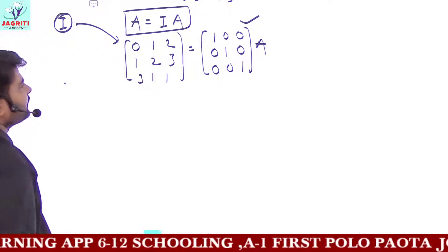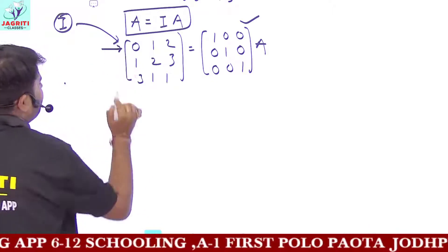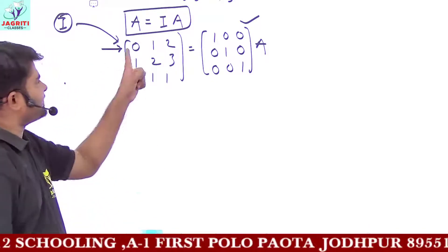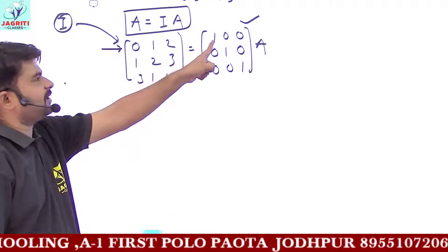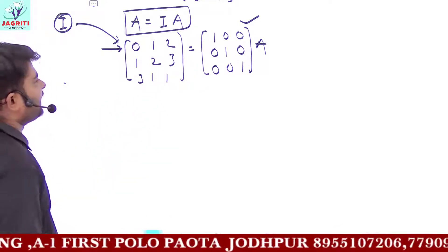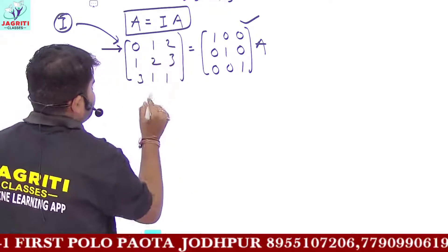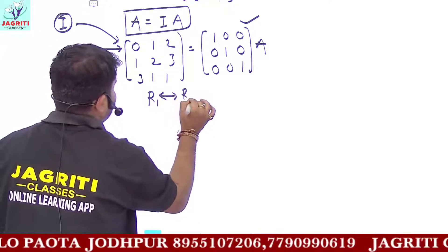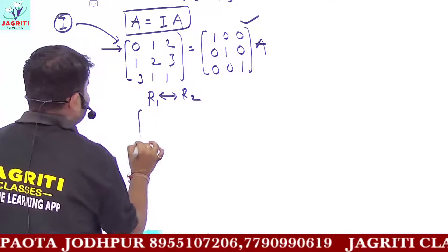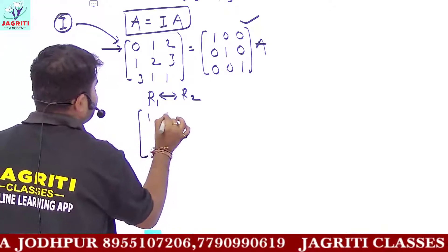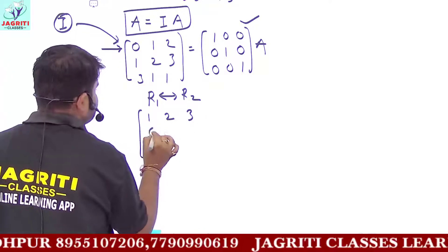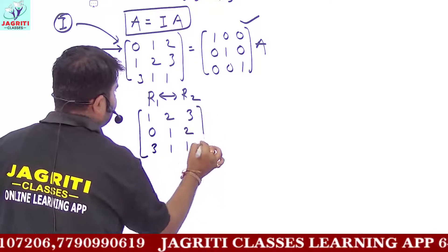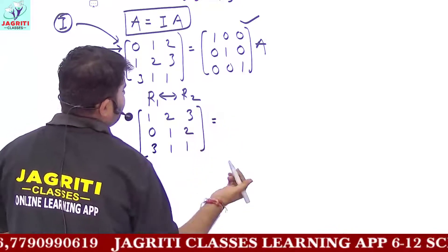Now notice that whenever the first element in a row is 0, but we need the first element to be 1, we will interchange the two rows. So by elementary operation R1 ↔ R2, we get: [1, 2, 3; 0, 1, 2; 3, 1, 1]. The right hand side we will not change for now — we will change it after applying all elementary operations to the left hand side.